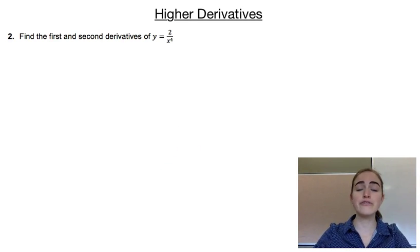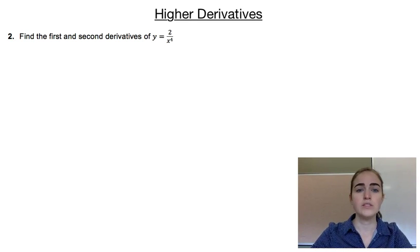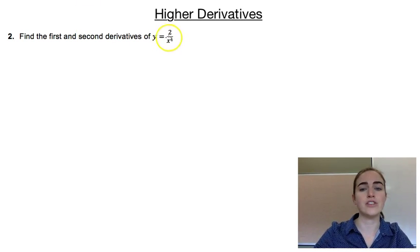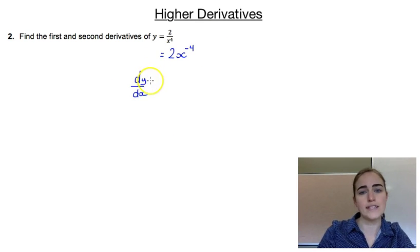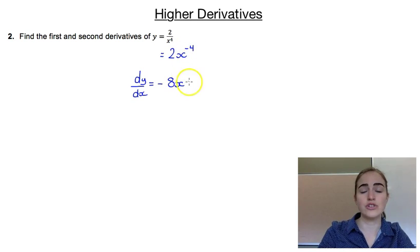Our second example asks us to find the first and second derivatives of y equals 2 over x to the power of 4. Before we differentiate that, we actually want to rewrite it so that x isn't in the denominator. So we'll rewrite that function as y equals 2x to the power of minus 4. Now we can differentiate — dy dx would give us minus 4 multiplied by the 2, so we'd have minus 8x to the power of minus 5.